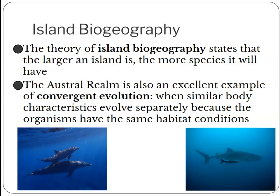These islands are a great example of island biogeography, which we also discussed in our Madagascar lecture. The bigger an island, the more species it will have — a larger island has more niches and opportunities for organisms to evolve. Australia is of course a very large island, and New Zealand consists of two big islands. Both are examples of island biogeography. Organisms evolve in isolation here. We find animals in New Zealand and Australia that we don't find anywhere else in the world. The Austral realm is a great example of convergent evolution.